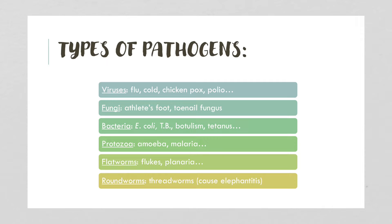Protozoa, such as amoeba and malaria, are protozoan-driven pathogens. Flatworms such as flukes and planaria can cause disease. Roundworms such as threadworms can cause a condition known as elephantiasis, where the pathogen blocks your lymph nodes, causing lymph buildup and swelling in your body.